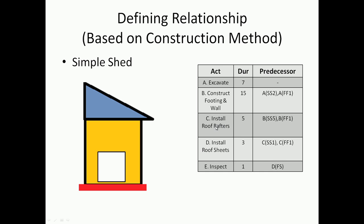Similarly, installing roof rafters will start only five days after the wall and footing has started, and can finish only after one day after that activity has finished - that is FF 1. And installing roof sheets: I can start one day after the rafters have started and it will finish one day after the rafter activity is completed. And for inspection, only after installation of roof sheets is done can inspection start, and it will take one day.